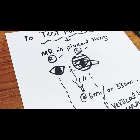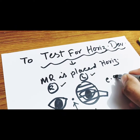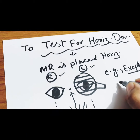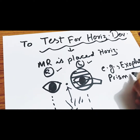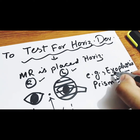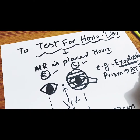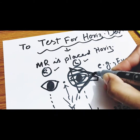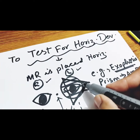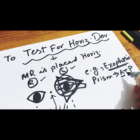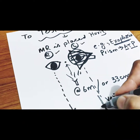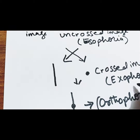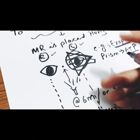For measurement of phoric deviation, prisms are placed in front of the fixating eye with the Maddox rod. In case of exophoria, the eye deviates outward, so the apex of the prism is placed in the outward direction — that is, base in. We increase the prisms until the crossed image is neutralized and the line image and light image are superimposed. Prism is placed with apex towards the phoria.